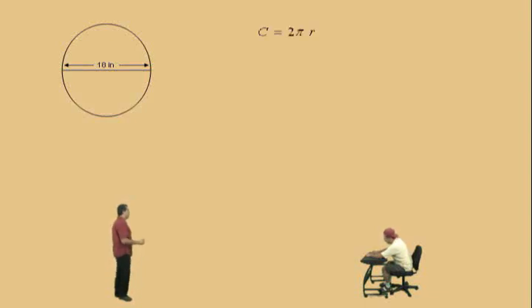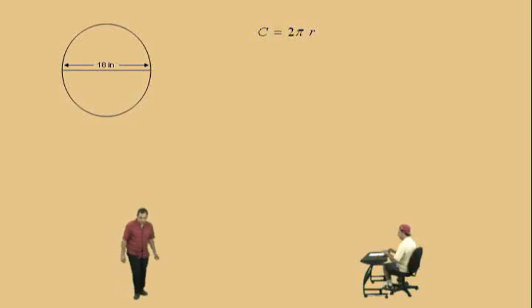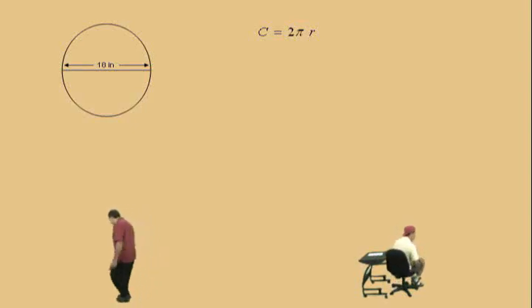Now, here, we're given the diameter to be 18 inches, and we're going to calculate the circumference. Remember, the circumference is the distance around the circle. It's like the perimeter of a circle, which means you start at one point of the circle, and then you walk all the way around that circle. And you go back to where you started, and if you were to measure that distance, that would be the circumference.